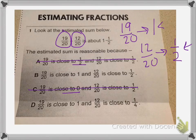So now I'm left with choice B and choice D that both say that 19 twentieths is close to 1. I also know that 12 twentieths is close to 1 half. So I can eliminate D because it says that 12 twentieths is close to 1 fourth.